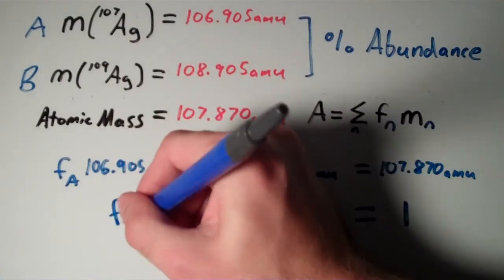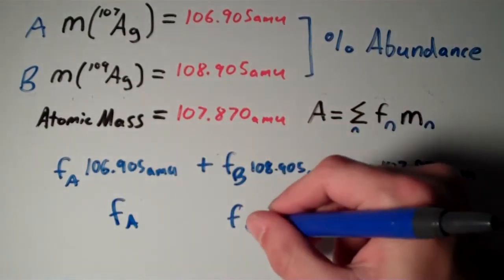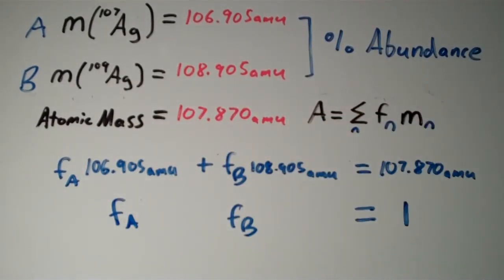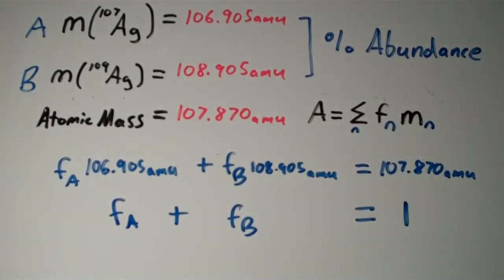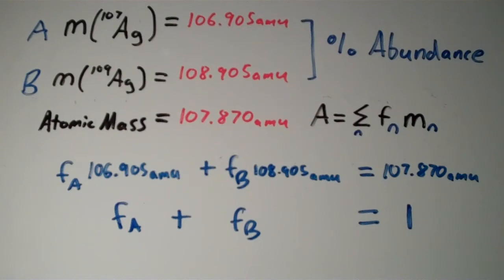So that means that the fraction of A plus the fraction of B is equal to one. So now we have a system of two equations, which we can solve because we have as many equations as we do unknowns.